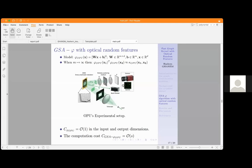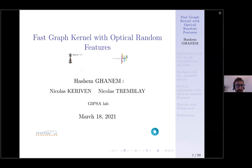Thank you for joining everyone. It's a great pleasure to give this talk today. My name is Hashem, and as was said before, I am a PhD student in Dijon working on the graph learning problem. Today's talk is titled 'Fast Graph Kernels with Optical Random Features.' This work was completed in my master internship, not my PhD. I worked with Nicola Kirvan and Nicola Tremblay, and I want to thank the Lighton company for the great help they provided and the free access to their OPUs.